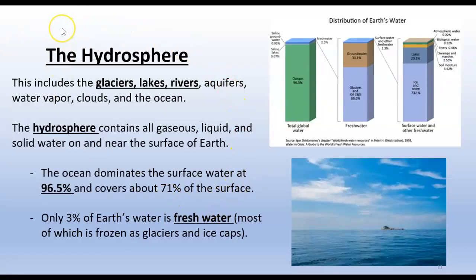The next sphere we're going to mention is the hydrosphere. As far as the atmosphere, there are some other activities that you'll be working on to explore those other layers. The hydrosphere includes glaciers, lakes, rivers, aquifers, water vapor, clouds, and oceans. The hydrosphere is basically, looking at that prefix water, anywhere there is water on the Earth.